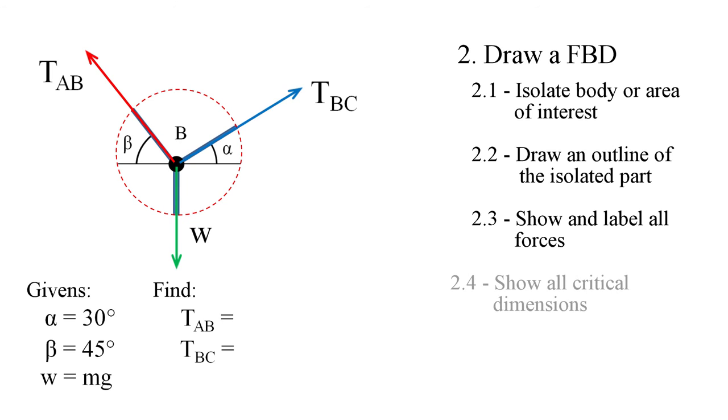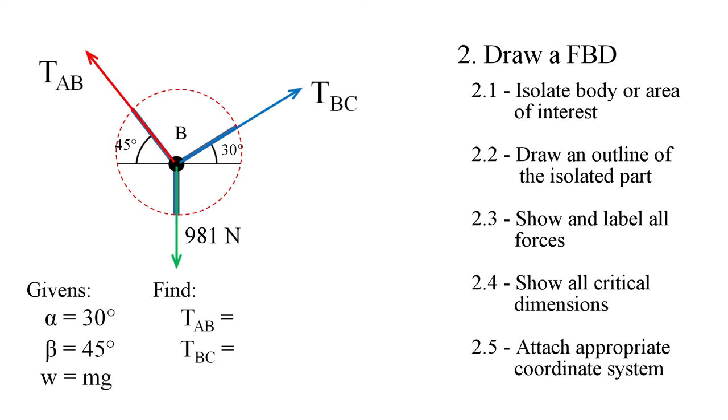The next step is to show all the necessary dimensions. We need to write them down. The critical dimensions in this case are the two angles, alpha and beta. Alpha is equal to 30 degrees and beta is equal to 45 degrees. Weight is 100 kilograms, and we can convert that to force by multiplying by g, which is 9.81. And therefore, the weight is 981 newtons. Finally, we always need an appropriate coordinate system to solve equilibrium problems. In this case, let us attach a rectangular xy coordinate system with its origin at point B.